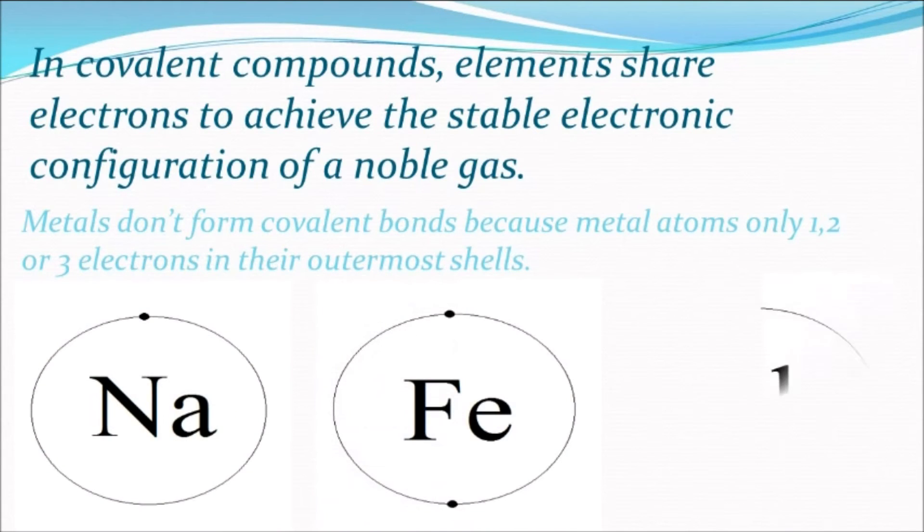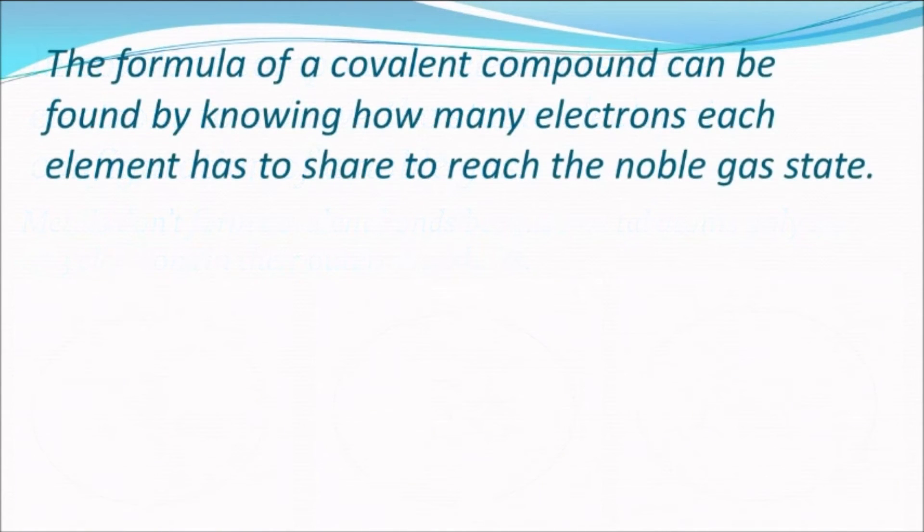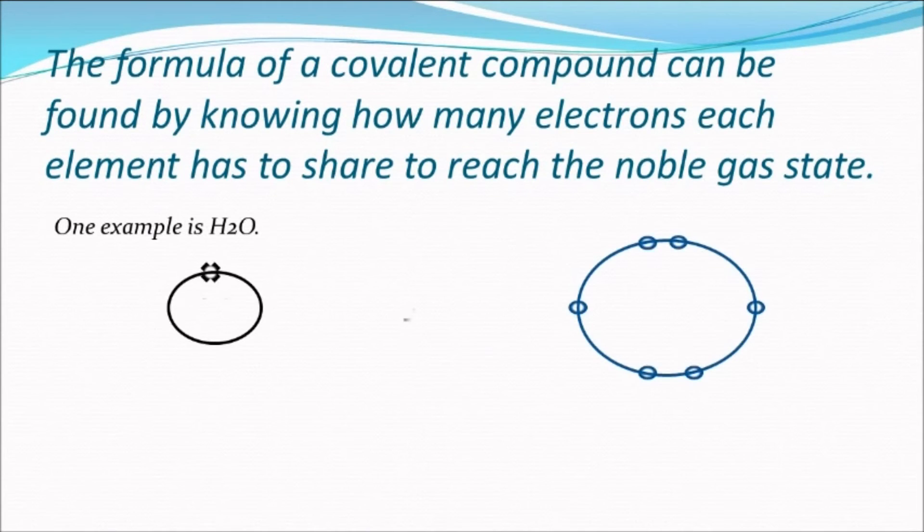So it is difficult to share five, six, or seven electrons with other atoms. We simply find the formula of a covalent compound by knowing how many electrons each element has to share to reach the noble gas state. You might find it less complicated if we took the covalent compound H2O under consideration.